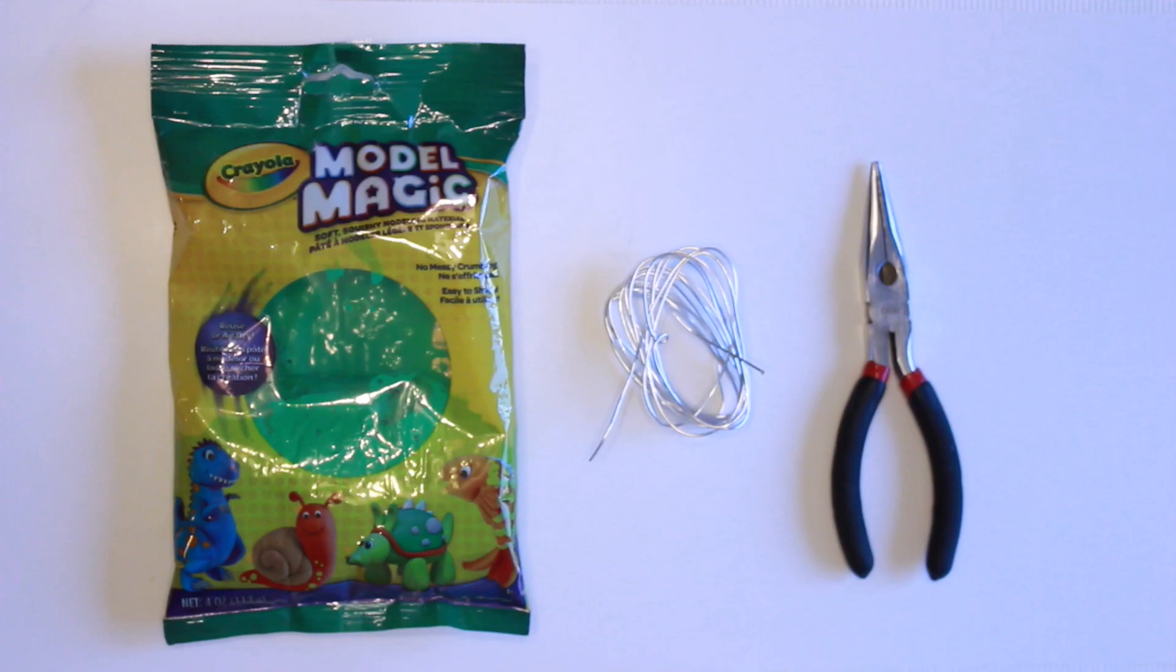So today we're going to jump right in with the tutorial. We're making Picket the Bowtruckle, Newt Scamander's favorite Fantastic Beast.